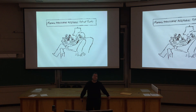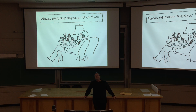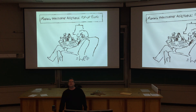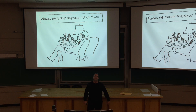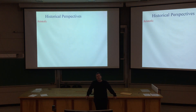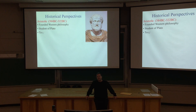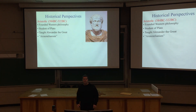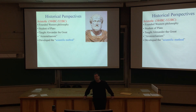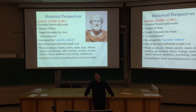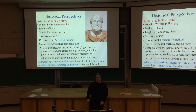Everything starts with the ancient Greeks — not all of history, of course, but the scientific revolution as a method. The scientific thinking, the idea that it's good to put things to the test, not just believe them arbitrarily because somebody said so, but see how they hold water and whether they're consistent with other things. Aristotle was one of the first people to say it's good to investigate and understand the universe using the scientific method. He was the student of Plato and also the tutor of Alexander the Great. He's said to be the last known person to know everything there was to know in his own lifetime.